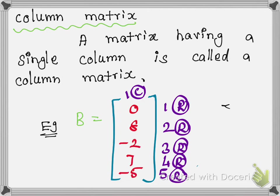There is only one column with many rows. This is called a column matrix.